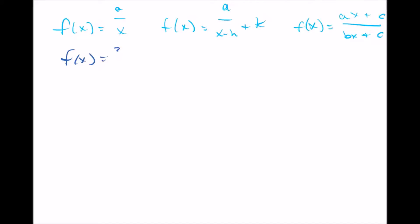In the last video, we talked about three types of simple rational functions. The first type, the most basic, is f of x equals some number a divided by x — something like f of x equals 3 over x. The next, slightly more complicated one, is something like f of x equals 3 over x minus 2 plus 5.